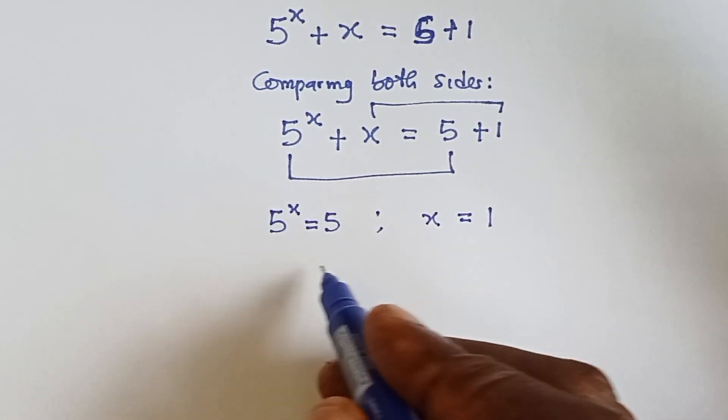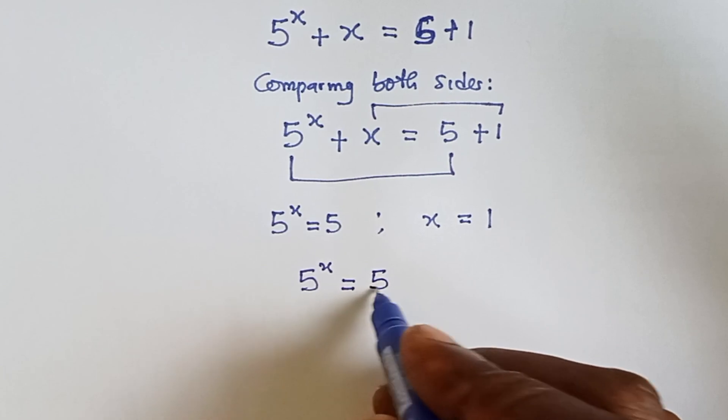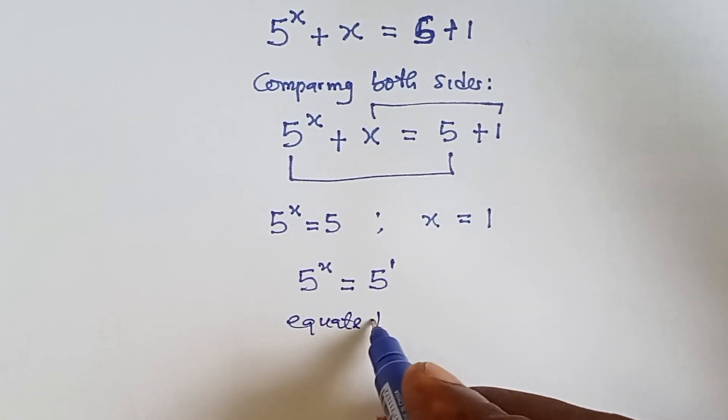Now, let's solve this. 5 raised to the power x equals to 5, same thing as 5 raised to the power 1. And then here we can equate the powers.